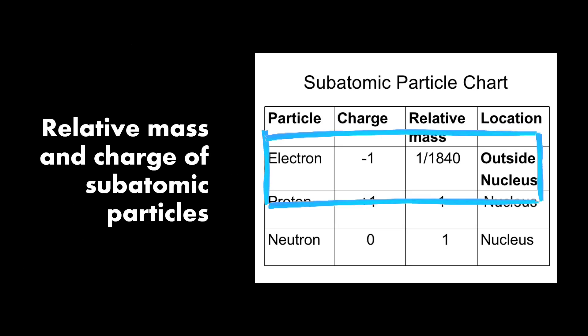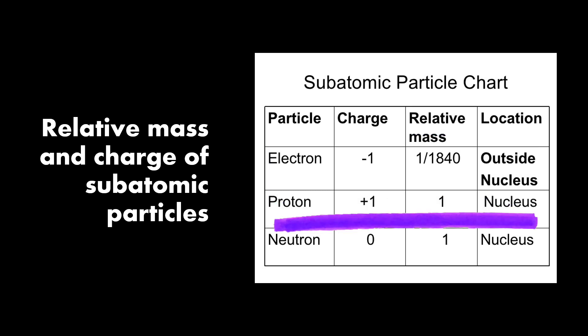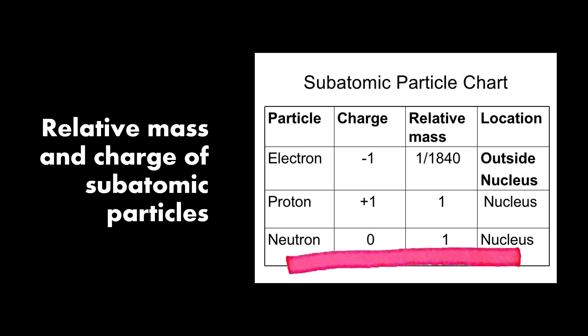The electron has a relative charge of negative 1, and a relative mass of 1/1840, and is located outside the nucleus. The proton has a relative charge of positive 1 and a relative mass of 1, and is located inside the nucleus. The neutron has a relative charge of 0 — so neutron is neutral — and a relative mass of 1, and is also located inside the nucleus.